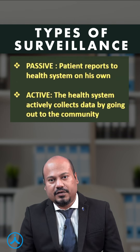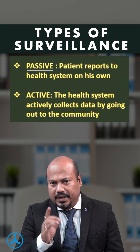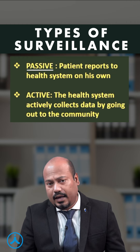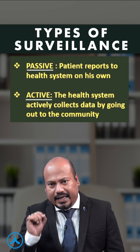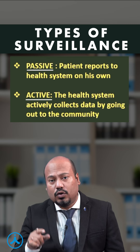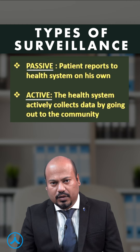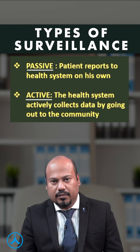Now, what are the types of surveillance? Passive surveillance means the patient comes to the OPD or the hospital with symptoms such as fever, cold, cough. Active surveillance means the health system goes out to the community. For example, under the national vector-borne disease control program, the health worker will go door to door every fortnight to collect blood slides from fever patients.